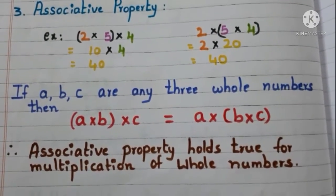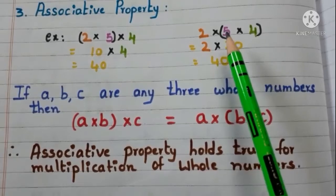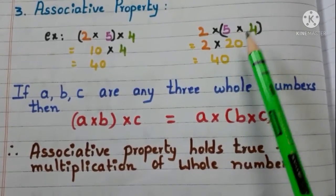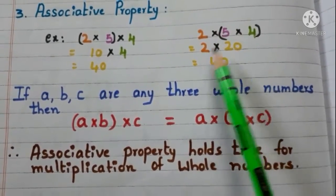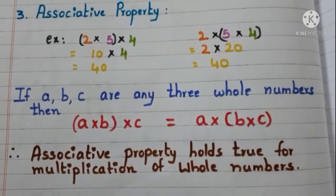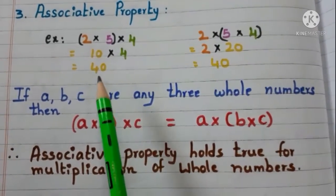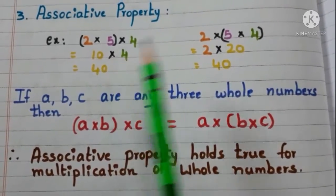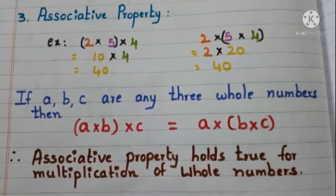Now, change the grouping. First, multiply 5 and 4. 5 times 4 are 20. Now, multiply with 2. 2 times 20 are 40. See here, we are getting the same result even though we change the grouping.